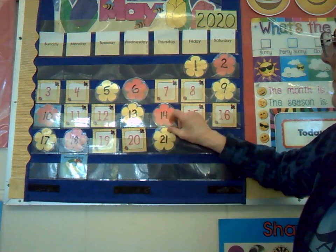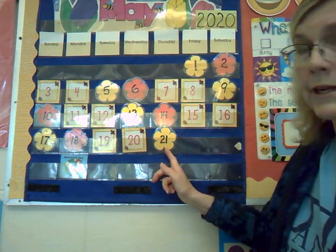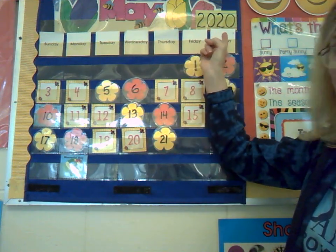We are into the 20s family of days. So the 20s family starts with a 2. That means there's two sets of 10, because we have 2 in the 10s place and then 1 in the 1s place. We'll slide it on in there and we're ready to say today's date. Today is Thursday, May 21st, 2020.